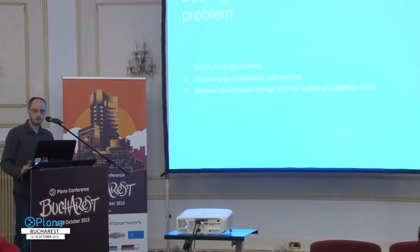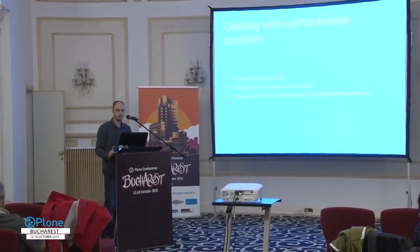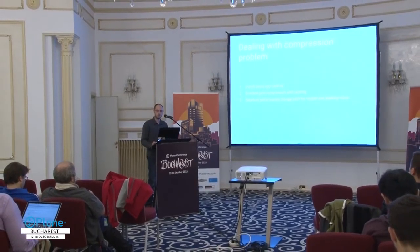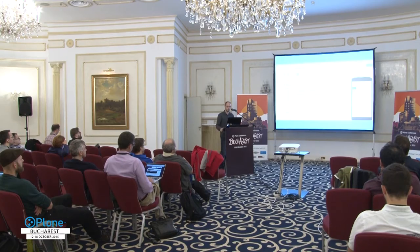Another issue the tools flagged was that we're not gzip-compressing the resources we ship to users. This is a really easy thing to solve: enable gzip compression and caching. Once you do that, measure again and see the performance difference it made. We can clearly see how the score went from 72 to 83 simply by adding an add-on and enabling it.